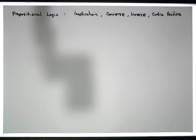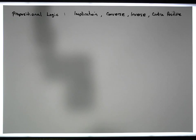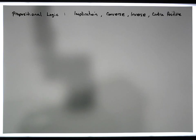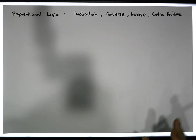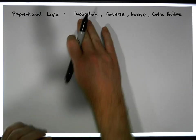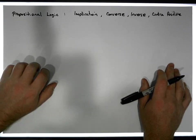Hi guys, this is Jonathan Lambert with the Mathematics Development and Support Service at the National College of Ireland. This short video, another in our series dealing with propositional logic, is going to consider the four important variants of an implication and their particular equivalents to each other.